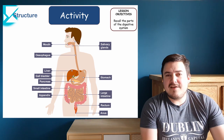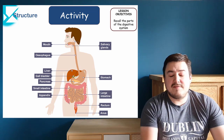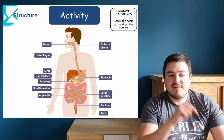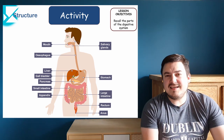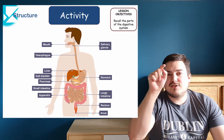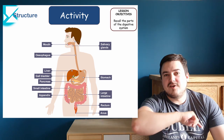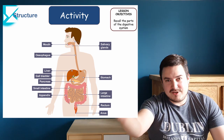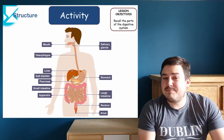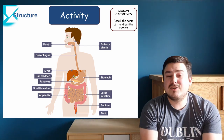Moving up the left-hand side, at the end of the intestines, we have the appendix, the small intestines, the pancreas, the gallbladder, the liver, and the esophagus, bringing us back round to the mouth. Those are the parts of the digestive system.